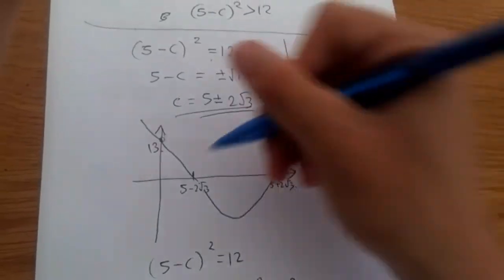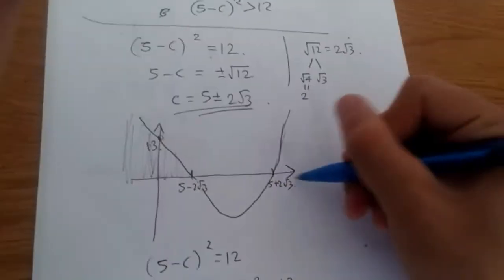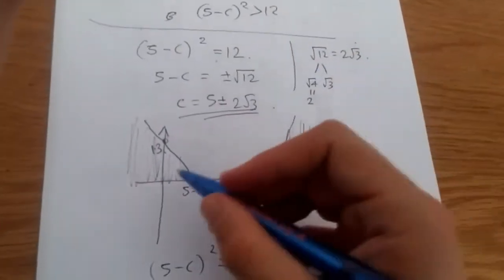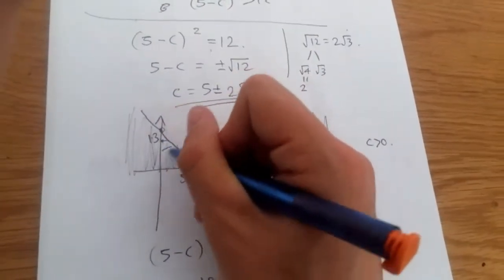So, we're looking at the end of the curve, when the curve is above the line, which is this part. So, we can see it's right here. Also, note that initially, we know that c is positive.